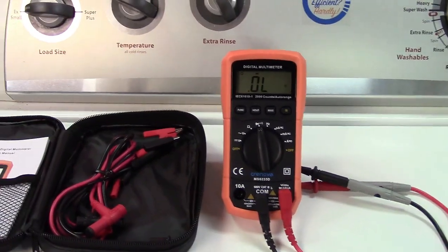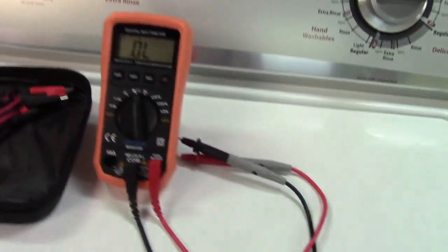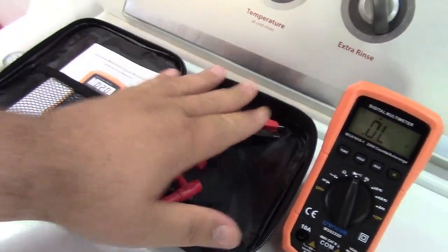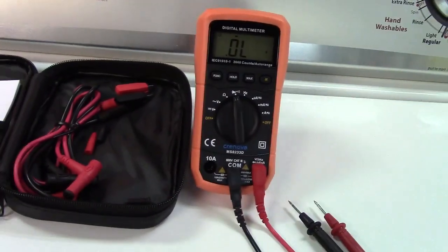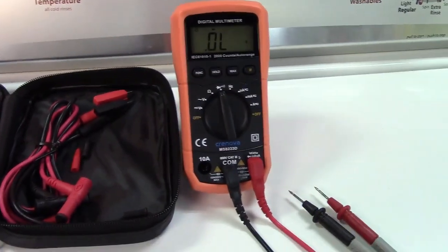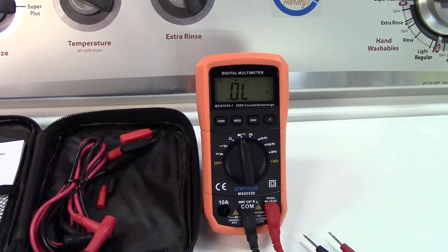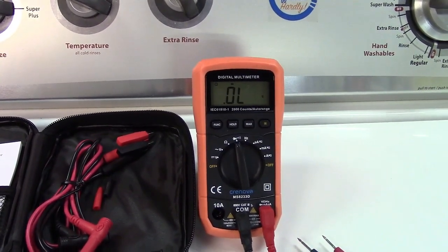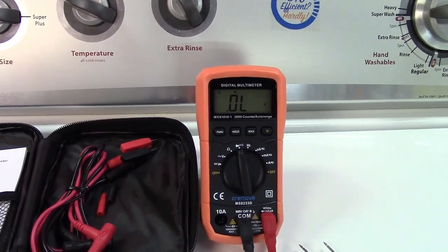So once again, this was the Crinova Auto Ranging Digital Multimeter. It's a full-featured multimeter. It has a nice set of probes. The alligator clip wires I found very handy as well. Everything is laid out in the manual for you, and it seems to be pretty accurate. So all around, a very nice digital multimeter from Crinova. If you'd like to purchase this item, I'll leave a link in the video description where you can find it available for sale on Amazon. Thanks for watching. Make sure you click like, subscribe, and take care. We'll see you next time. Bye-bye.